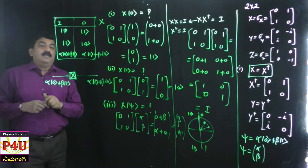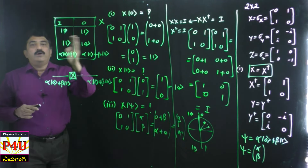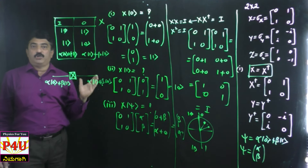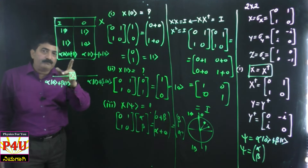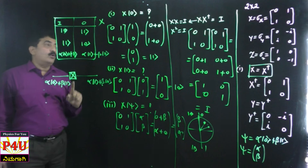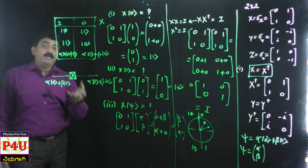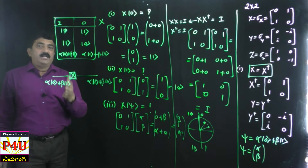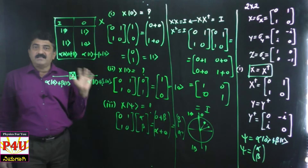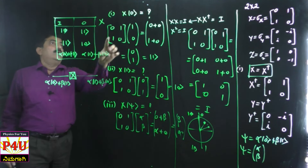This is about Pauli matrix X - its properties and the X operation. Now let us see what will happen if we do the same thing for Y and Z. X will change |0⟩ to |1⟩ and |1⟩ to |0⟩ - therefore it is called a flip-flop circuit; it will flip the state. Please try Y and Z as an assignment until my next video.